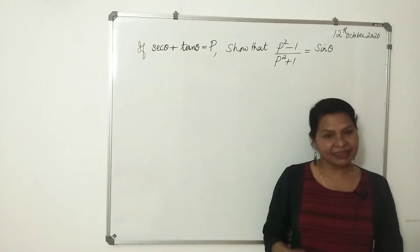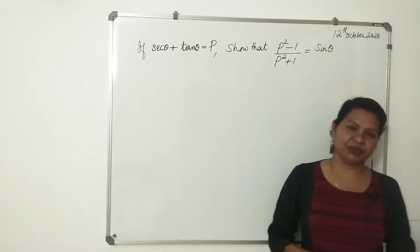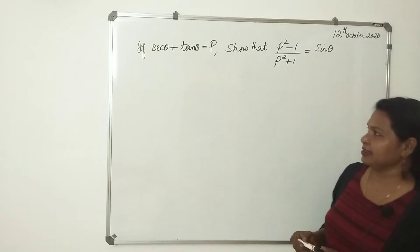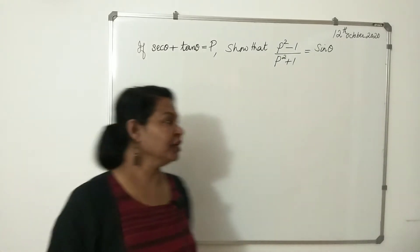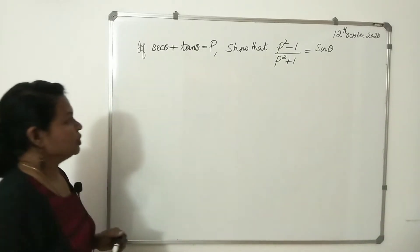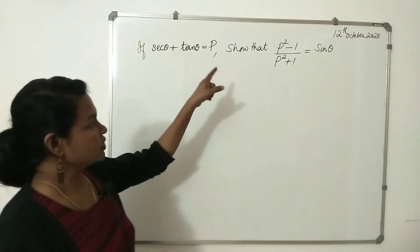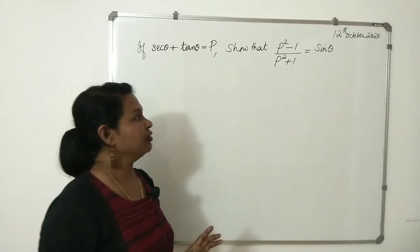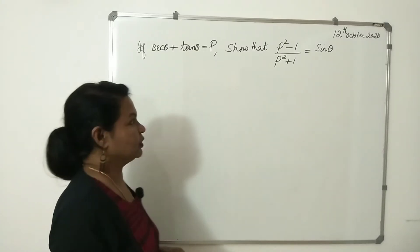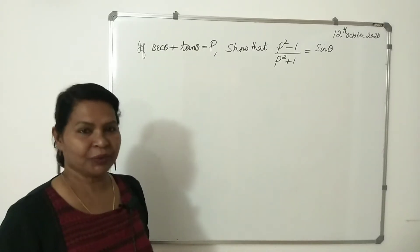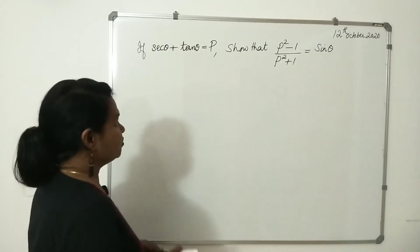Hi everyone, this is the question for the day: if secθ + tanθ equals p, show that (p² - 1) divided by (p² + 1) equals sinθ.